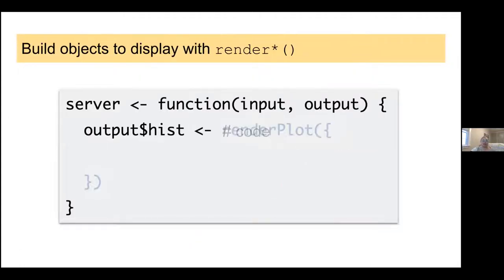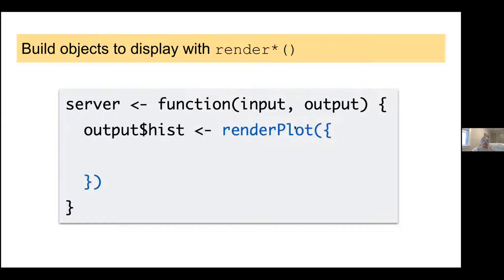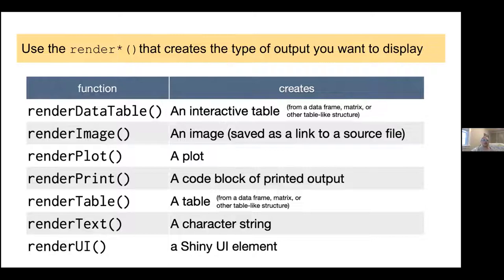Unfortunately we can't just type in hist(rnorm...) — we have to use another function that tells the server to render the plot and send it to the user interface. These are called the render functions. In this case, we're going to use renderPlot because we want to make a plot. There are lots of different render functions and they'll match up with your output functions. If you're wanting to output text, you'll use renderText. If you're doing output table, you'll use renderTable. Basically what this is doing is building a reactive output to display in your user interface.